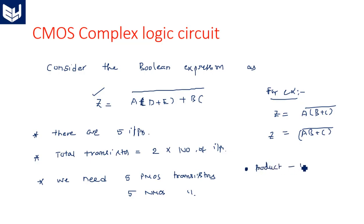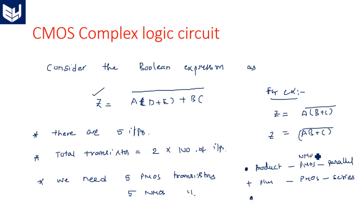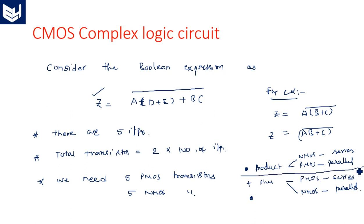For a product combination, PMOS transistors should be in parallel. For a plus (sum) combination, PMOS transistors should be in series. The opposite applies for NMOS: for product, NMOS is in series; for plus, NMOS is in parallel. With these four rules, we are going to design Z = A(D + E + BC)̄.